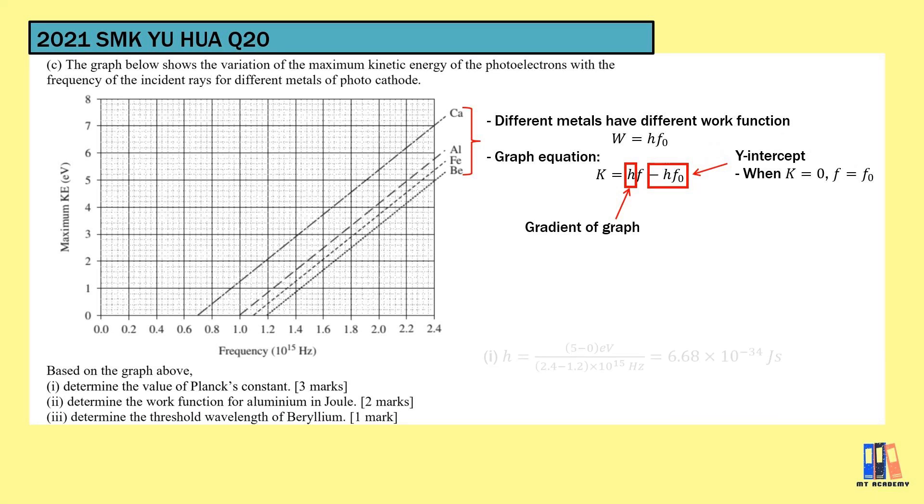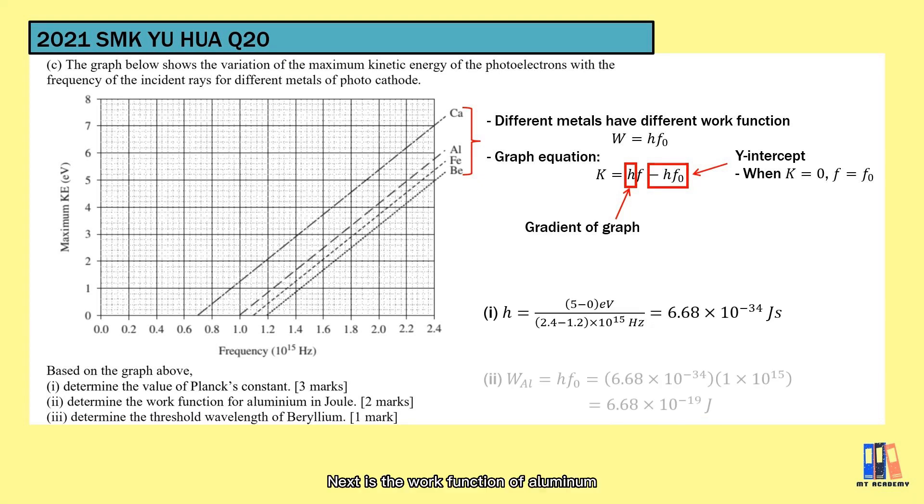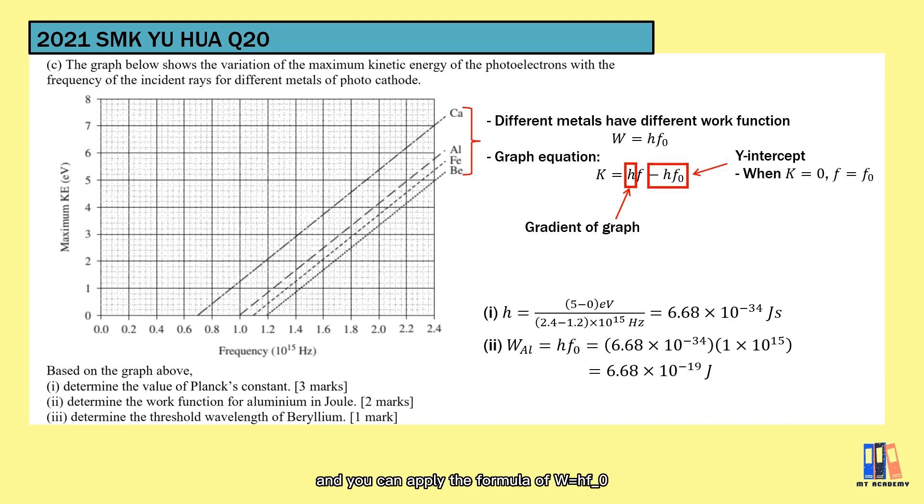So after you understand those few things for the graph, let's quickly go through the question. This is the value of Planck constant which is the gradient of the graph. One reminder here is about the unit conversion. You can try to do it on your own. Next is the work function of aluminium. Let's read the x-intercept for the aluminium which is the threshold frequency and you can apply the formula of W equal to hf0. Last is the threshold wavelength of beryllium. Remember the formula of v equal to f lambda where the velocity of light is 3 times 10 to the power 8 meters per second.